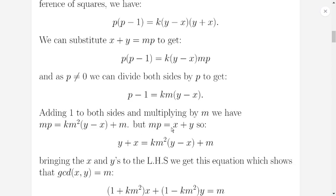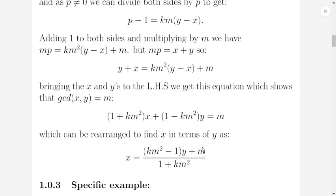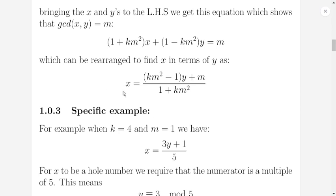And we already know that m times p equals x plus y, so this means that x plus y equals k m squared times y minus x plus m. And bringing the x and y to the left hand side, we get this equation, which shows that the greatest common divisor, because if you've got some number times x plus some number times y equals m, the greatest common divisor of x and y must divide m, which can be rearranged to find x in terms of y, so we get this equation.